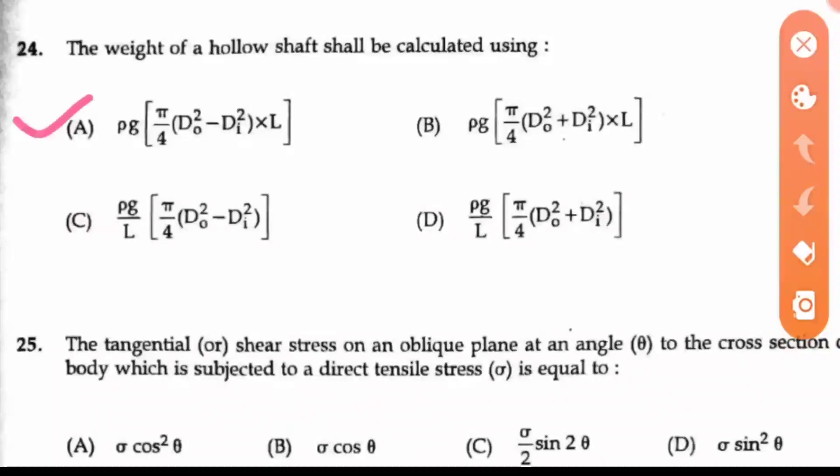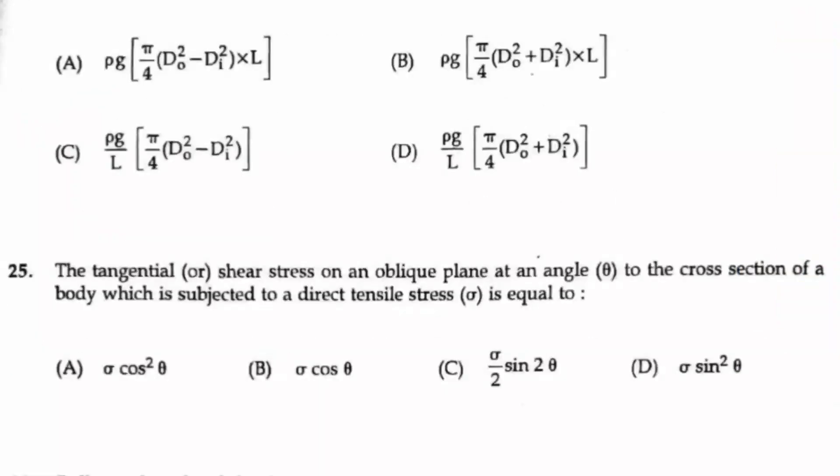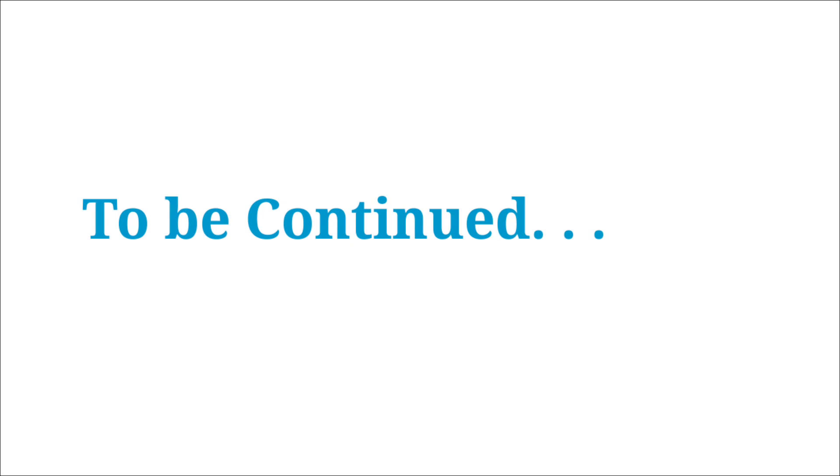Question 25: The tangential or shear stress on oblique plane at an angle θ to the cross section of a body which is subjected to a direct tensile stress. If the tensile stress alone is acting on a body, its shear stress will be equal to (σ/2)sin(2θ). The answer is C. Thank you and keep watching for the continuation of the question-answer discussion.